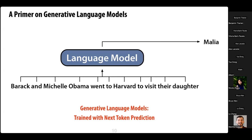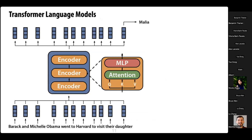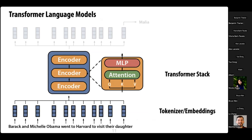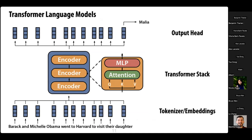In that sentence, there are context clues that tell you the next word is 'Malia' — because Barack and Michelle Obama have two daughters named Malia and Sasha, and Malia is the one who went to Harvard. The way transformers do this is: you embed every word, pass those embeddings through a transformer stack, and at the end get an embedding used to predict the next token. I'm sure this is familiar to the group — just laying down foundations.